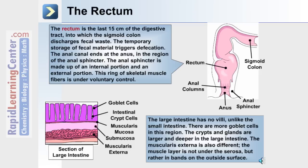In this last section, we'll review the histology of the large intestine. Shown in the diagram is a section of large intestine. Goblet cells and intestinal crypt cells are in the mucosa; underneath is the muscularis mucosa, the submucosa, and the muscularis externa, which is the muscle layer. Unlike the small intestine, the large intestine has no villi. There are more goblet cells in this region, and the crypts and glands are larger and deeper. The muscularis externa is also different — the muscle layer is not under the serosa but rather in bands on the outside surface.